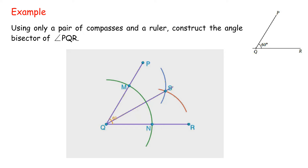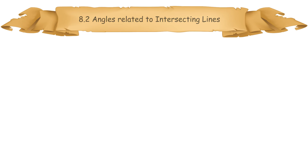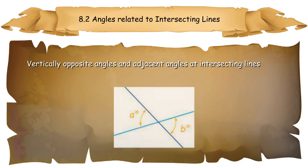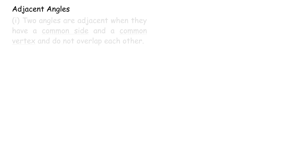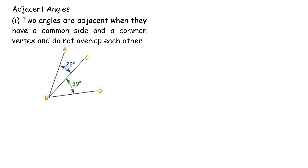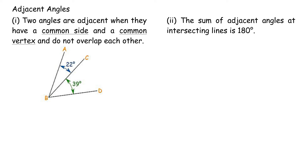Beginning with the construction of an angle of 60 degrees, we can construct other angles accurately using only a pair of compasses and a ruler. 8.2 Angles Related to Intersecting Lines. Vertically opposite angles and adjacent angles at intersecting lines. Vertical angles are the angles opposite each other when two lines intersect; they share the same vertex and are equal (congruent). A equals B.